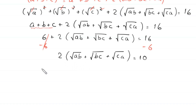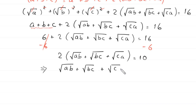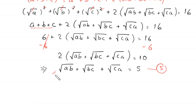Subtracting 6 and dividing by 2, this implies root(ab) plus root(bc) plus root(ca) equals 5. Let's call this equation 5.